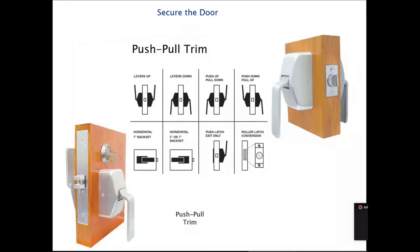Part of securing the door is using a hospital latch. This push-pull latch allows you to use your hip, elbow, arm, or shoulder to open the door. They're made in models where they push down on both sides, or you can pull down — if it's a pull-down model, you can use your arm to open the opening. Different functions are available: levers up, push only, pull only, or one push and one pull — it just depends on the function you're trying to achieve in your facility.